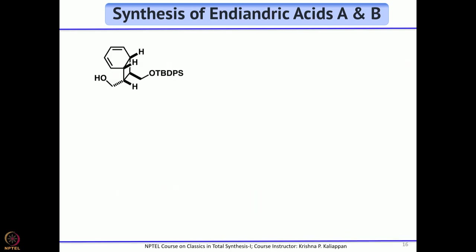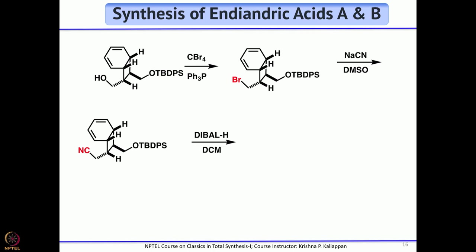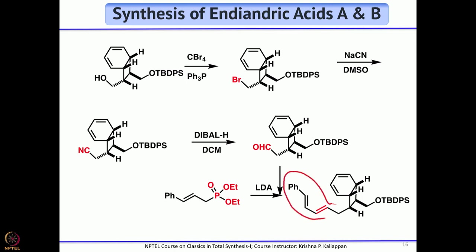The next step was to homologate the free alcohol. First, convert the alcohol into a good leaving group — making the bromide — then an SN2 displacement reaction with sodium cyanide in DMSO gives the cyanide, homologating CH₂OH to CH₂CN. The cyanide is then reduced with DIBAL to give an aldehyde, and the aldehyde undergoes a Horner-Wadsworth-Emmons Wittig reaction to give the diene.